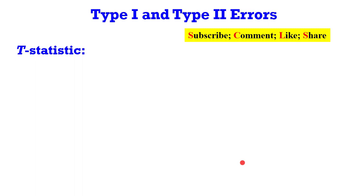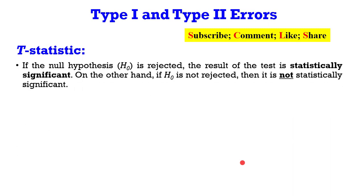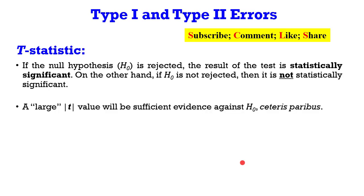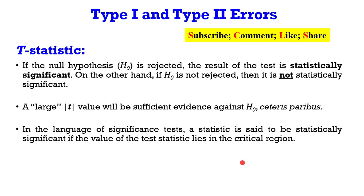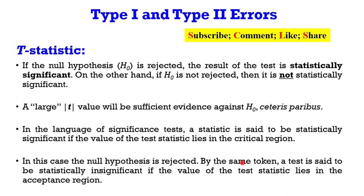Let's take a look at the T statistic. If the null hypothesis is rejected, it shows that the test result is statistically significant. If the null hypothesis is not rejected, it shows that those coefficients are not significant. A large T statistic will be sufficient evidence against the null, all things being equal. In the language of significance testing, a statistic is said to be statistically significant if the value of the test statistic lies within the critical region. I'm going to show you a graph to explain this. By the same token, a test is said to be statistically insignificant if the value of the test statistic lies in the acceptance region.